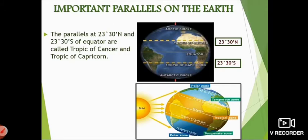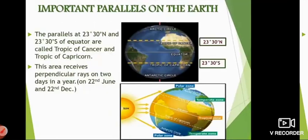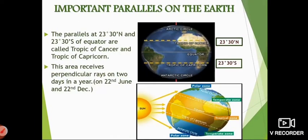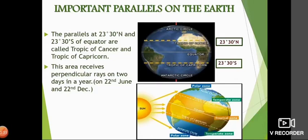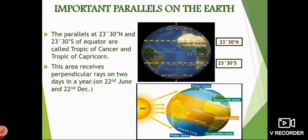All the places between 23 degrees 30 minutes north and 23 degrees 30 minutes south of the equator receive perpendicular sun rays on two days in a year — that is on 22nd June and 22nd December. So on two days in a year this area receives perpendicular sun rays. Perpendicular means straight, as shown in the diagram with three straight lines. Other areas on the earth never get perpendicular rays — only the areas between these two parallels, the Tropic of Cancer and Tropic of Capricorn, receive perpendicular sun rays.